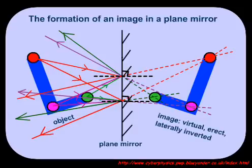The final point that you have to make is that each point on the image is as far behind the mirror as the object is in front.